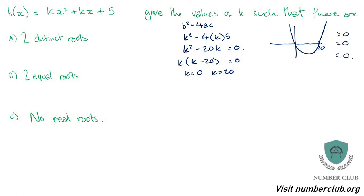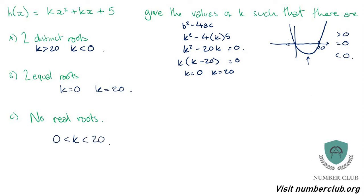Two distinct roots is when the discriminant is greater than 0, which happens when k is greater than 20 or k is less than 0. Never try to combine those into one inequality — there's no number that is both greater than 20 and less than 0. Those are two separate inequalities. Two equal roots is when b squared minus 4ac equals 0, so k equals 0 or k equals 20. No real roots is when k is between 0 and 20. You must graph it.